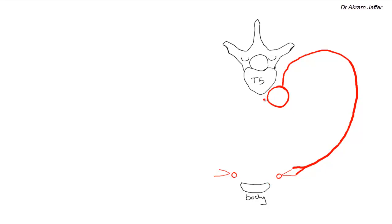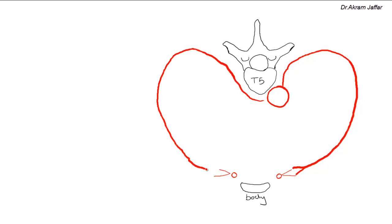Since the aorta is a little bit deviated to the left, the right posterior intercostal arteries are a little bit longer than the left, because they have to cross the midline to go to the right side. They pass around the thoracic wall and, again anteriorly, they anastomose with the anterior intercostal arteries.